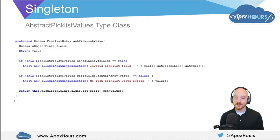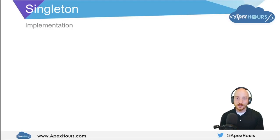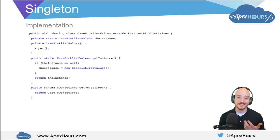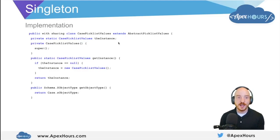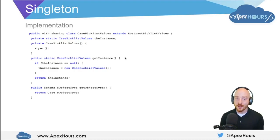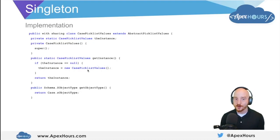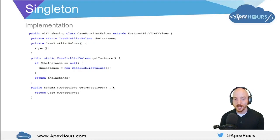Now we want to have global access to this, and that's why we're going to use the singleton pattern as we extend this on the Case SObject. Here is our implementation of the singleton pattern on a class called CasePicklistValues. It extends AbstractPicklistValues, and we can see all the hallmarks of the singleton pattern: a private static variable called 'instance', a private constructor, and a public static method called 'getInstance' which lazily instantiates the instance variable and returns it. The 'getObjectType' method is defined here, returning the Case SObject type.